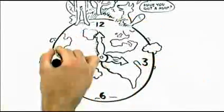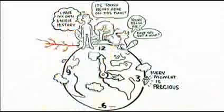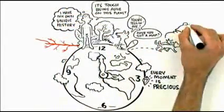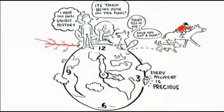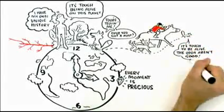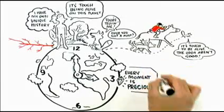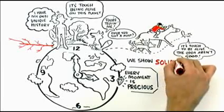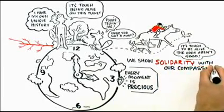When a child learns that life is vulnerable and fragile and every moment is precious and that they have their own unique history, it allows a child then to experience another's plight in the same way, that that other person or other being has a one and only life, it's tough to be alive, and the odds are not always good. We have the width of death and empathy and the celebration of life, and we show solidarity with our compassion.